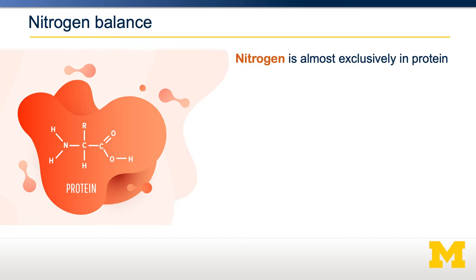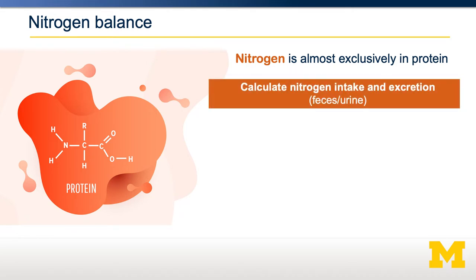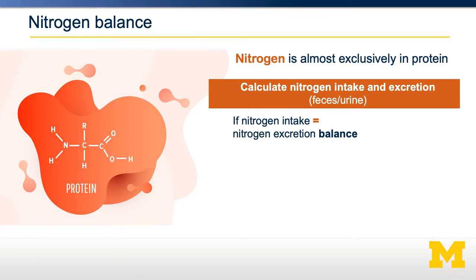Let's go through some examples. If somebody ingests a known amount of nitrogen, and we measure exactly how much nitrogen they excrete through their urine and their feces, we can calculate the difference between how much they're ingesting and how much is being excreted. If those amounts are exactly the same, they are in nitrogen balance.